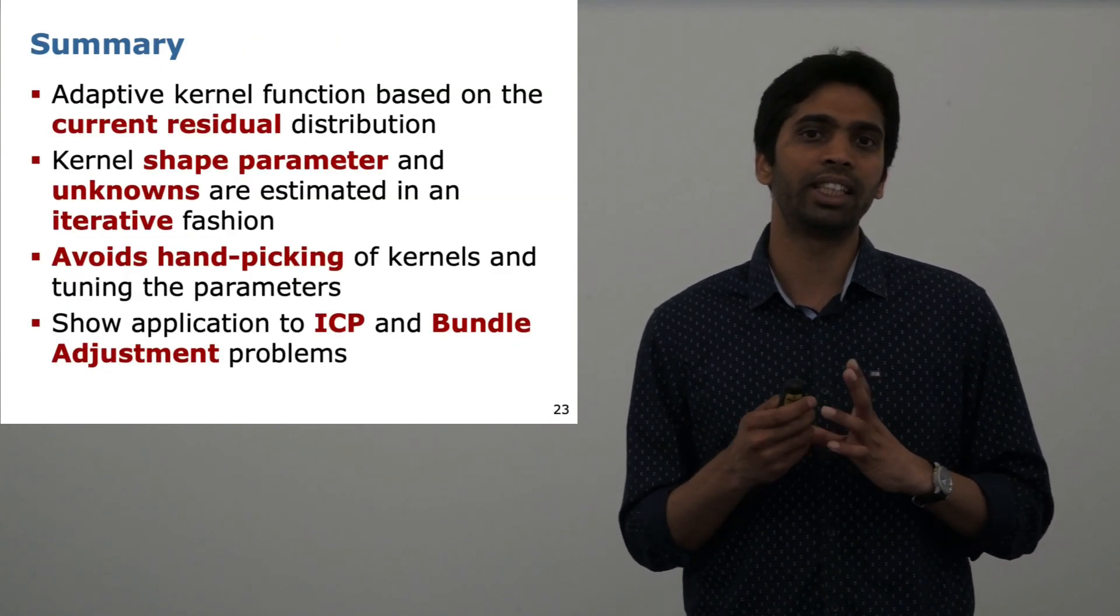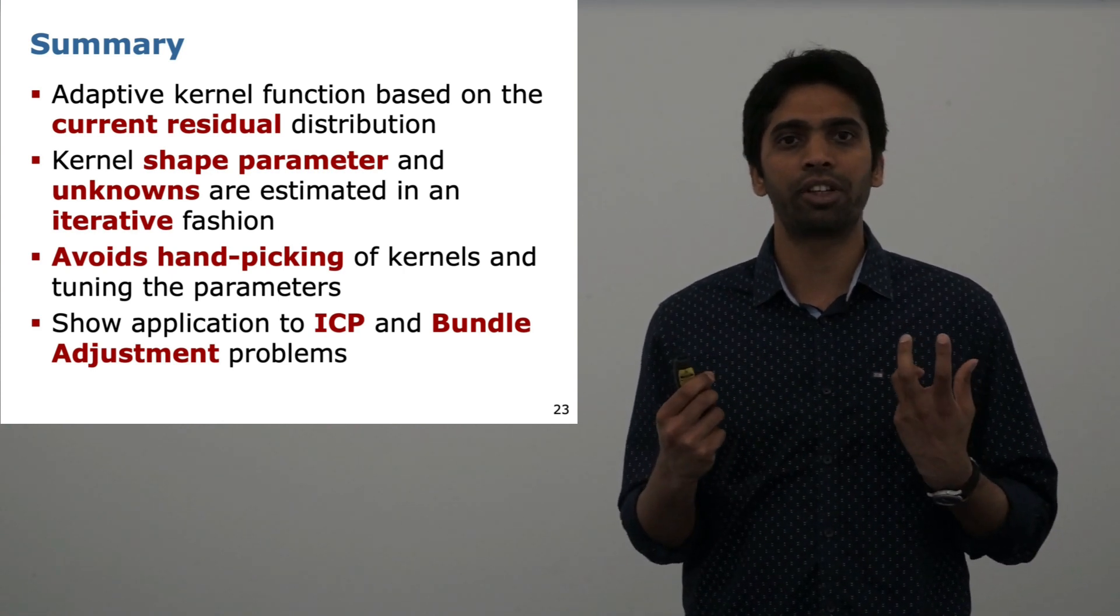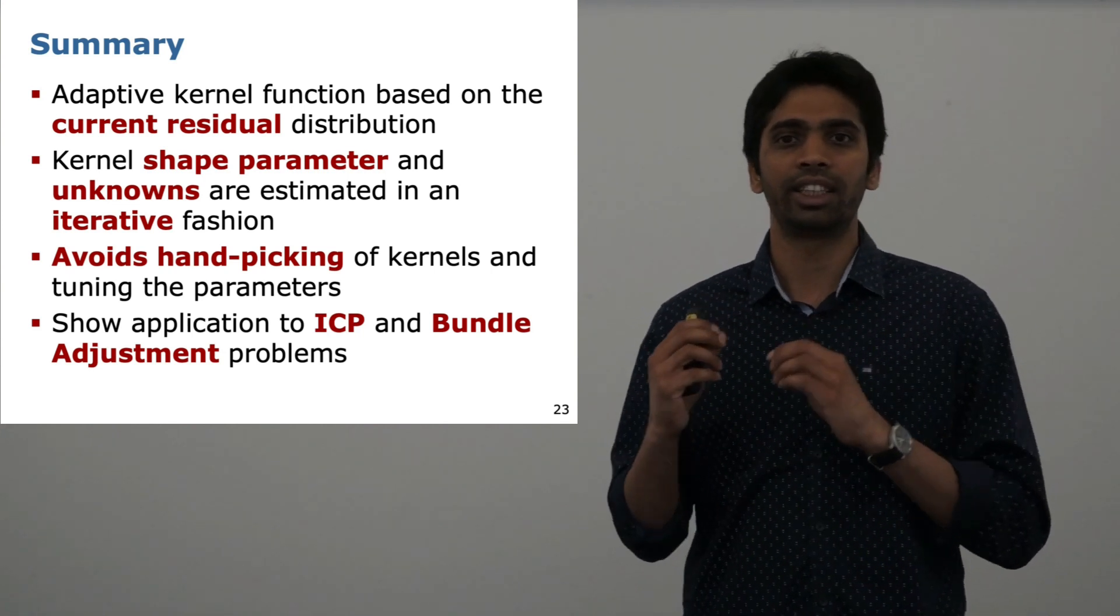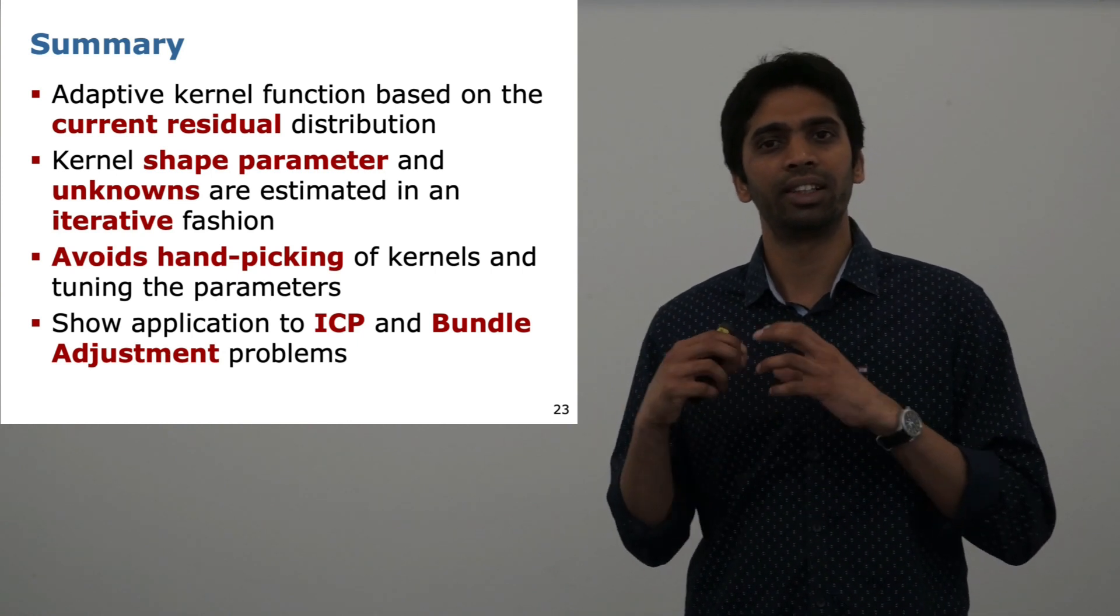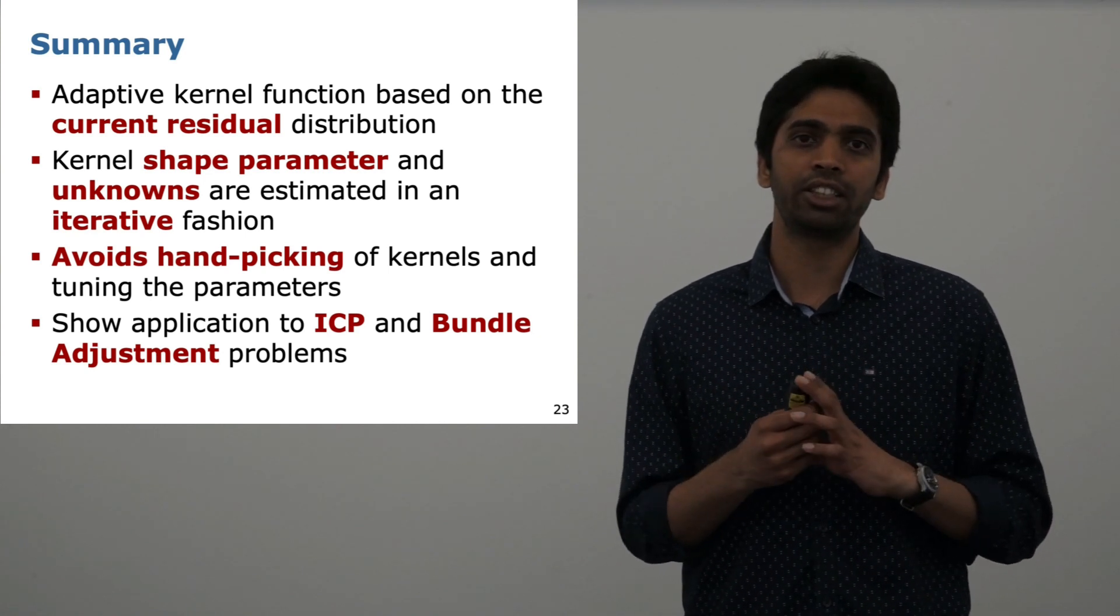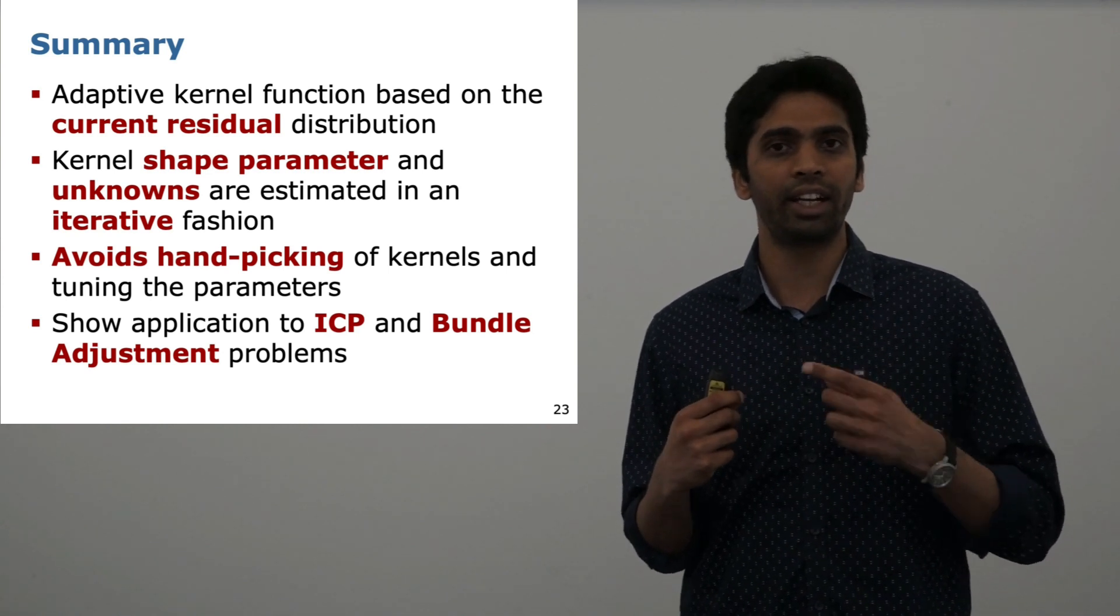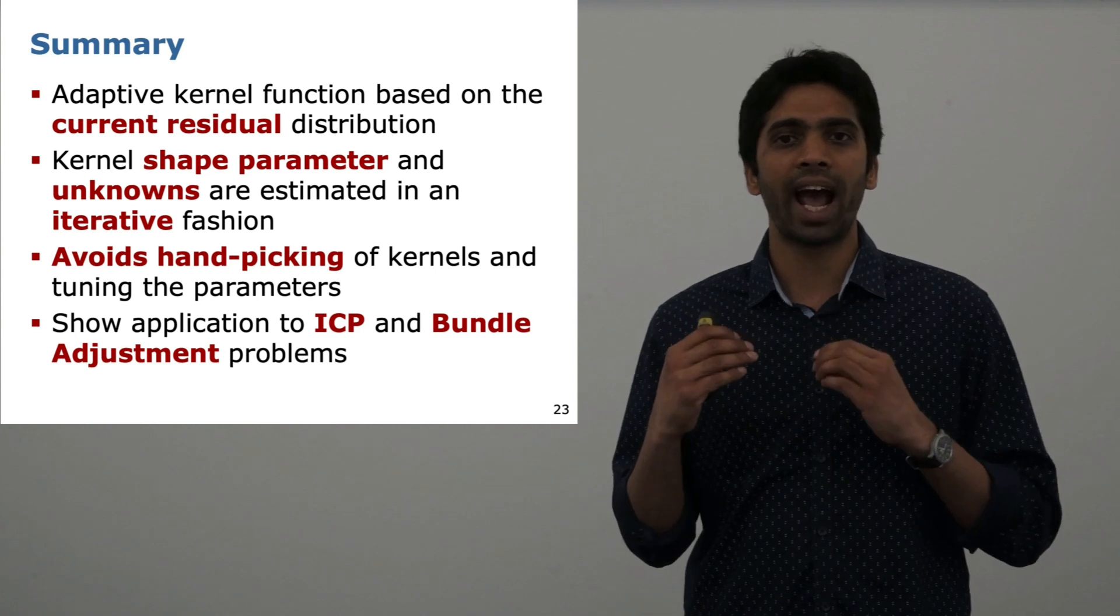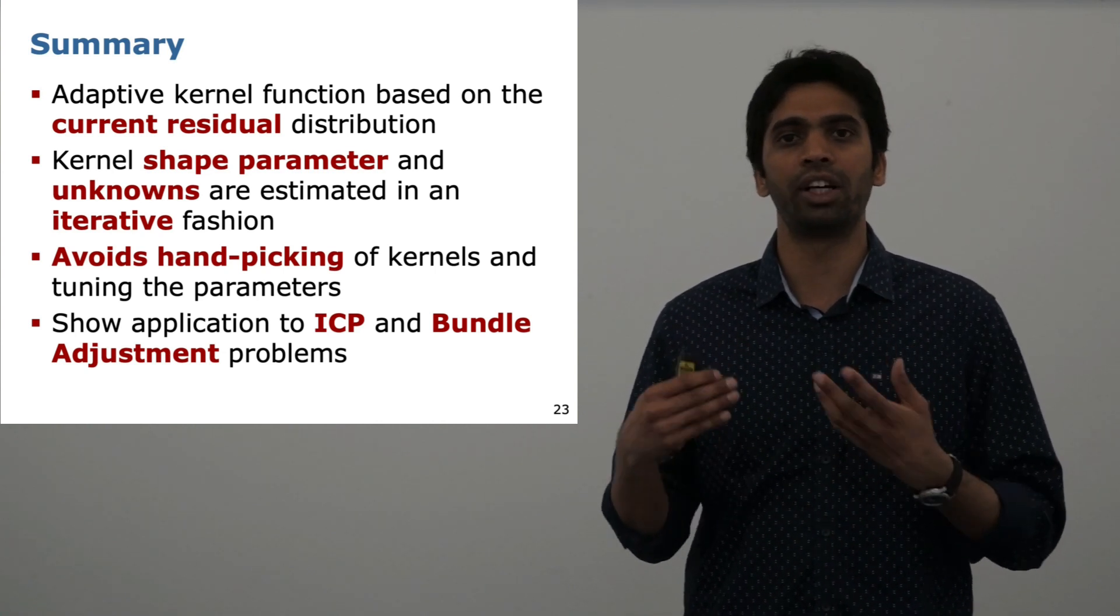Finally, to summarize, in this paper I presented a method where we use an adaptive kernel to adapt the shape of that kernel based on the current residual distribution. This lets us react to the current situation in the scene. In this case, we estimated the shape parameter and unknowns in an iterative fashion, which allowed us to avoid hand-picking of these kernels, and we did not need to tune any parameters for a new example.